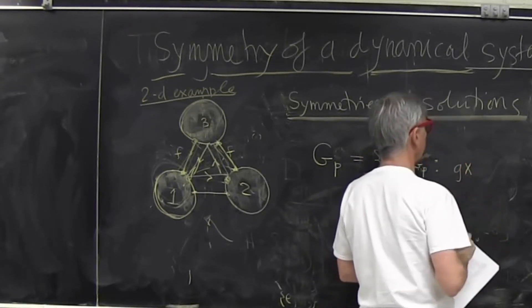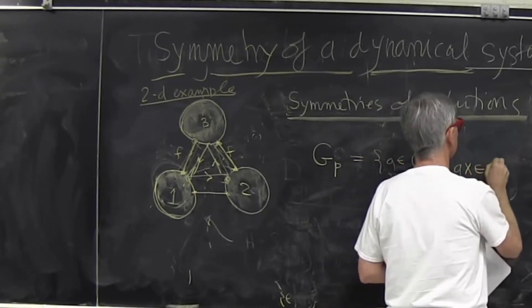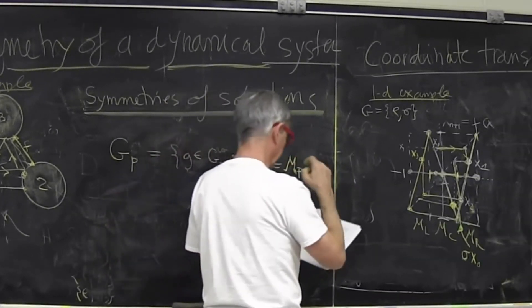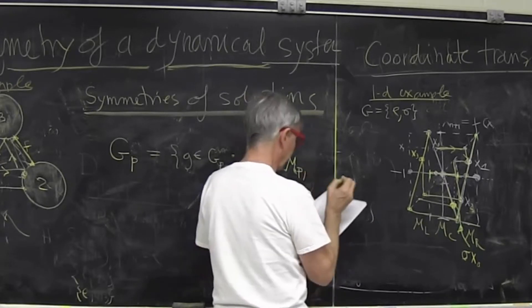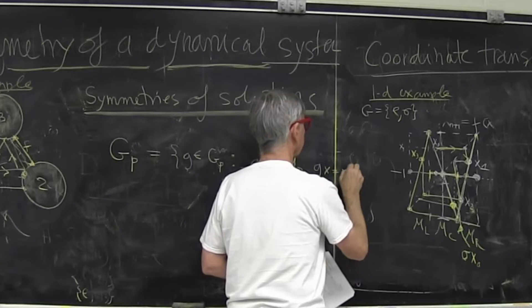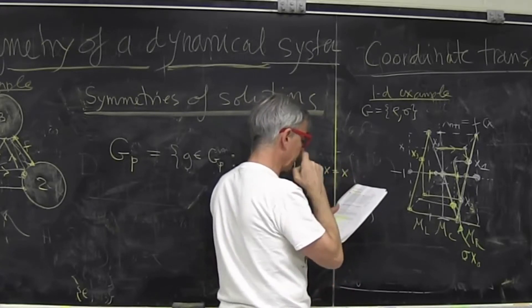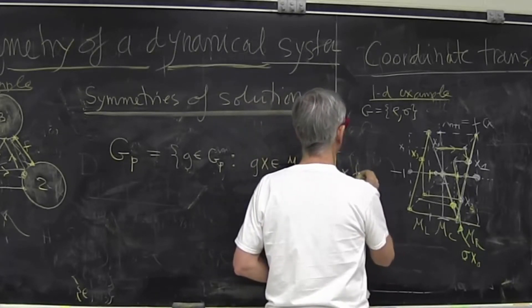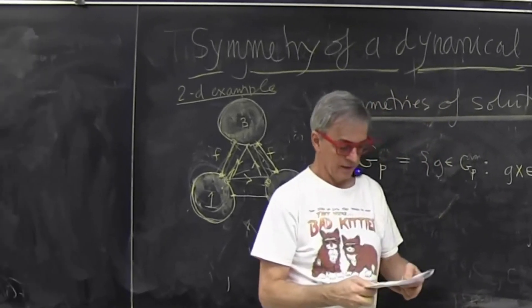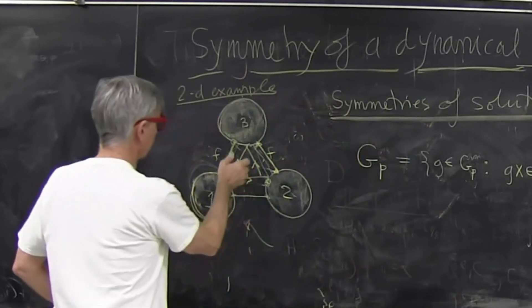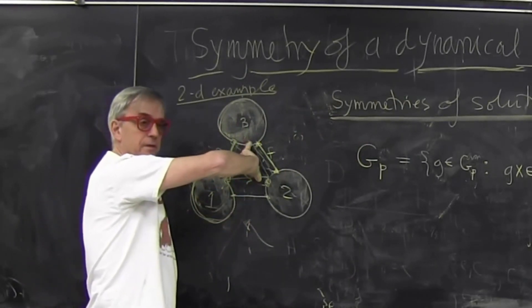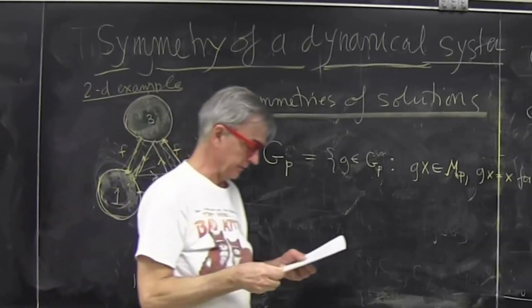G applied to any point in this set. If you have an orbit, you just give it a name. It's a subset of the full state space with the property that G of X is not X, it doesn't have any fixed points on the group operation for G not equal E. What that means is that when I apply my symmetry subgroup, each point moves. None of them are fixed. So that's the symmetry of the solution.